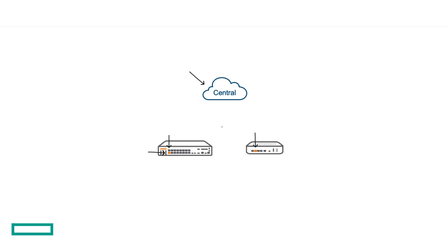When you're doing one-touch provisioning, the only thing you need to be aware of is that you generally need to connect in through the console. You connect in through the console, configure an IP address on that device, and then plug it into your MPLS circuit, for example, and then it'll go up and grab its configuration from Aruba Central like we defined earlier.